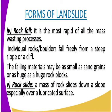Then we have the rock fall. It is the most rapid of all the mass wasting processes. Individual rocks and boulders fall freely from a steep slope or a cliff. The falling materials may be as small as sand grains or as huge as large rock blocks. Then we have the rock slab — a mass of rock that slides down, especially over an abraded surface.